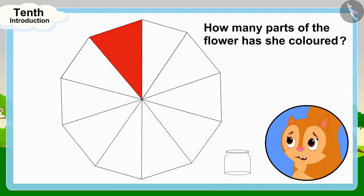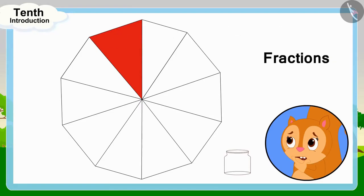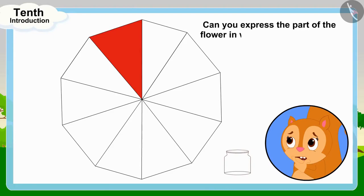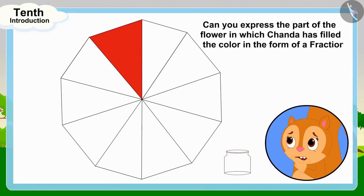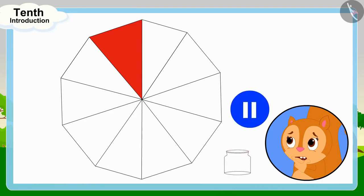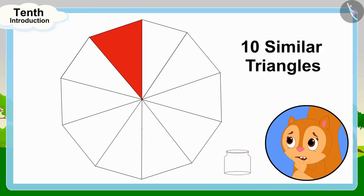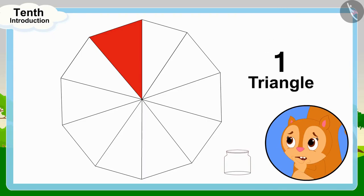Children, do you remember fractions? Can you express the part of the flower in which Chanda has filled the color in the form of a fraction? If you wish to, you may stop the video and find the answer. This flower is made up of 10 similar triangles and Chanda has colored one of these triangles.